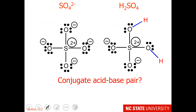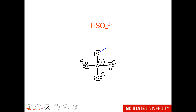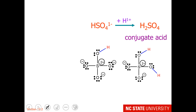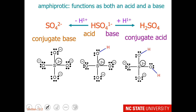Here is the sulfate ion, and here is an acid where we have added two protons. Are these a conjugate acid-base pair? Do they differ by one proton? No — they differ by two protons. This brings up another vocabulary word: HSO₄⁻ can be protonated to give the conjugate acid or deprotonated to give the conjugate base. We call this material amphiprotic — it functions as both an acid and a base.